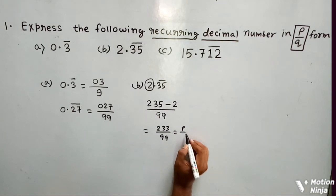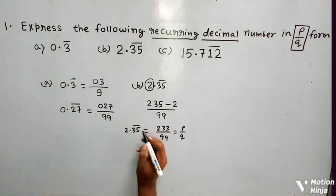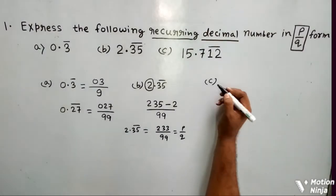So here I am able to express it in the form of p by q. It means 2.35 bar equals 233 by 99.